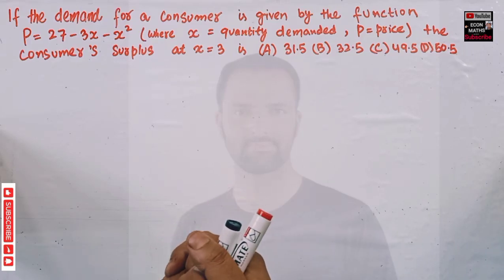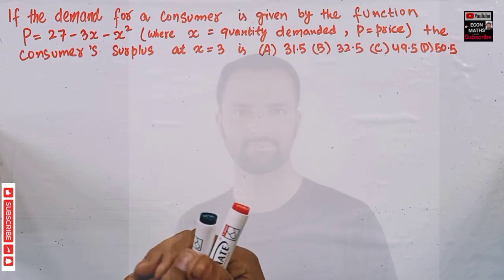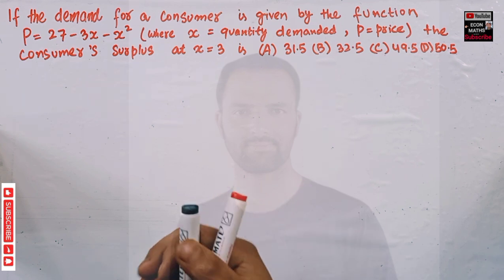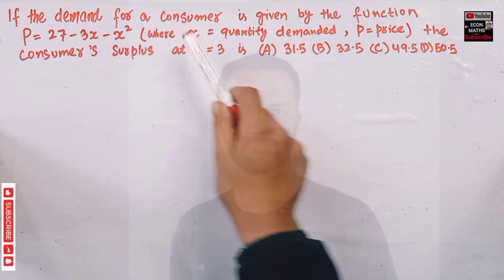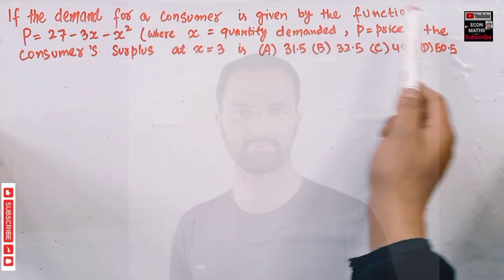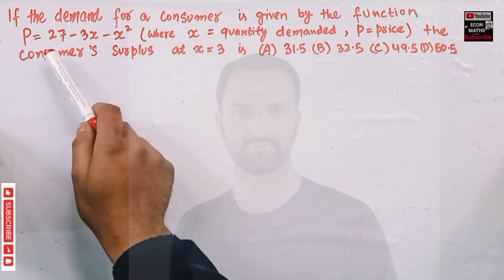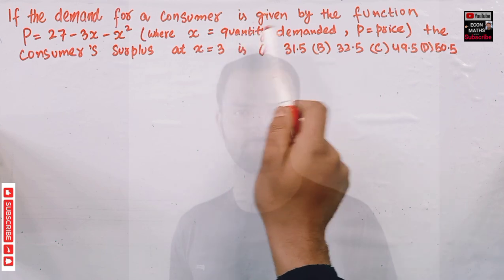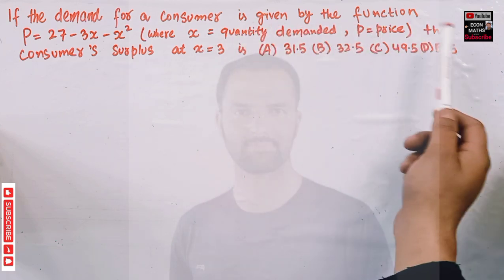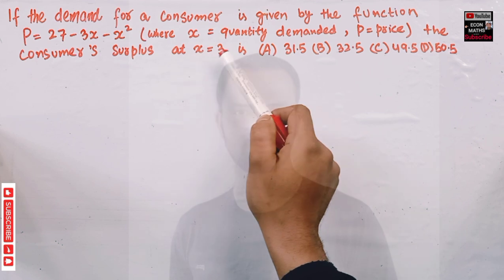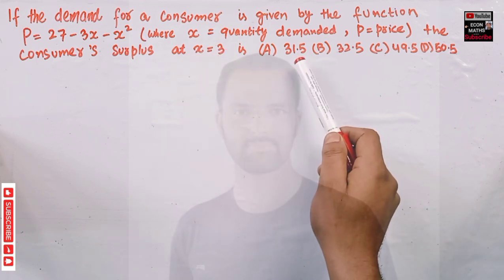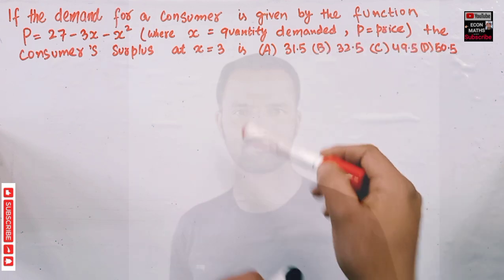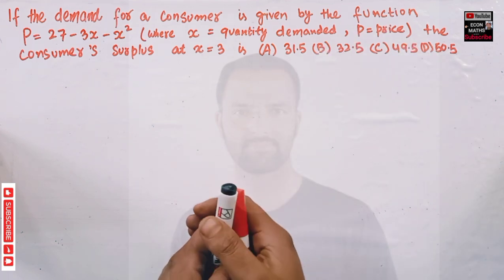Hi, this is hello. In this video on the mathematical economics series, we will try to solve a problem on consumer surplus that was asked by a brother on the Telegram channel. The question is: the demand function for a consumer is p = 27 - 3x - x², where x denotes quantity demanded and p is the price. We need to find the consumer surplus when the equilibrium quantity is 3 units. The options are 31.5, 32.5, 49.5, and 50.5.